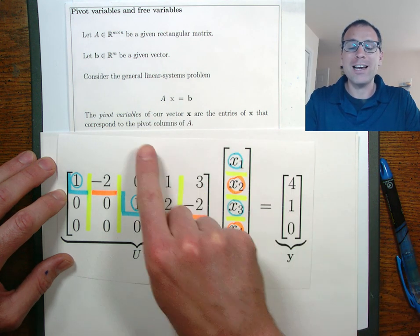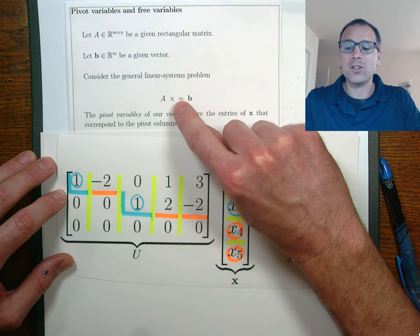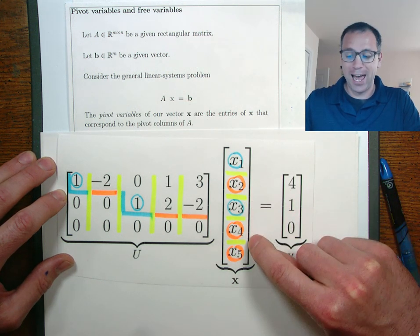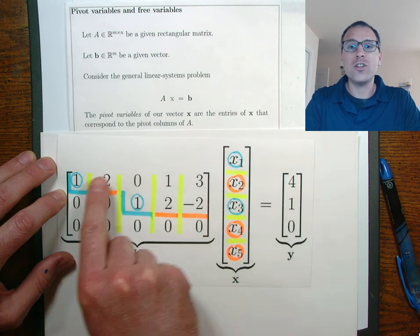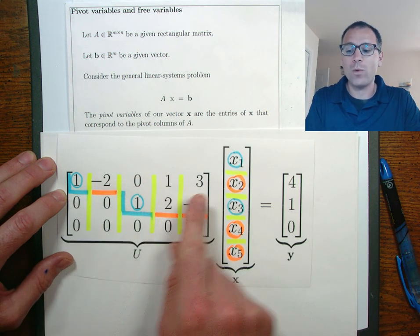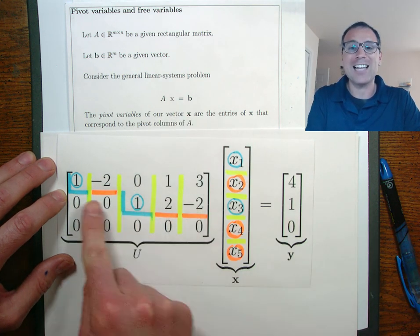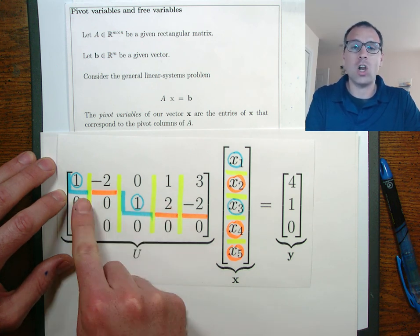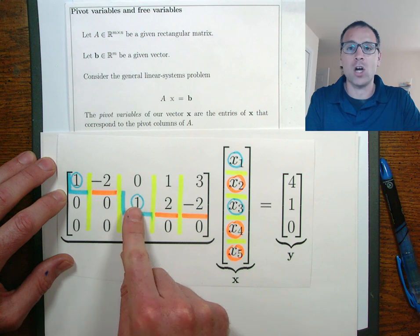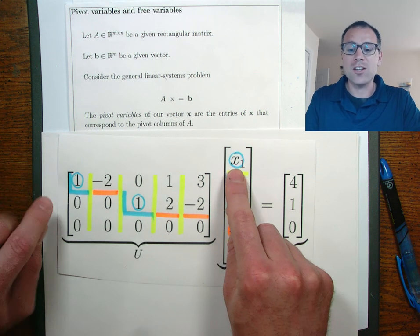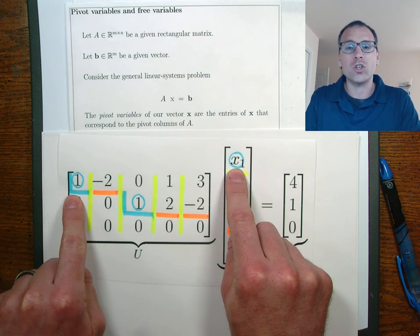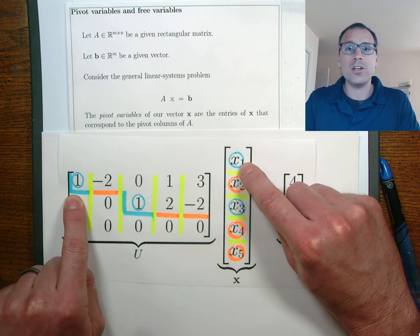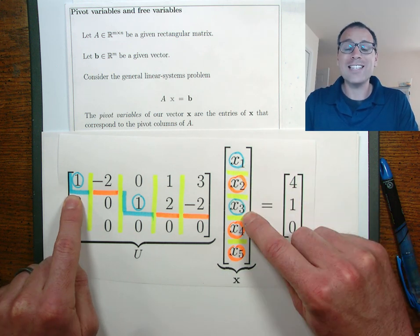Specifically we define pivot variables of our vector x as the individual entries in x that correspond to the pivot columns of a when we think about a times x as linear combinations of the columns of a. Because the columns of a map very nicely onto the columns of u, we can use the stair step structure of rref to identify that x1 is going to be a pivot variable, so is x3.